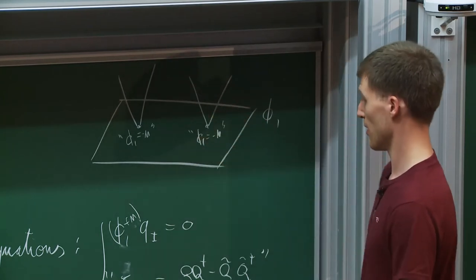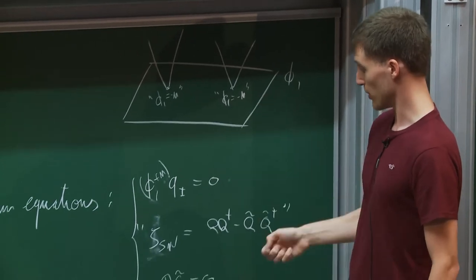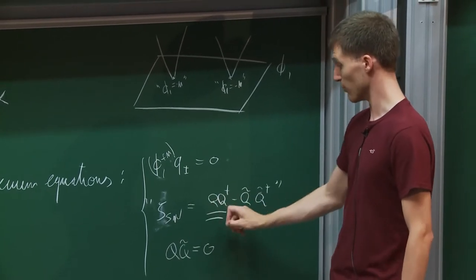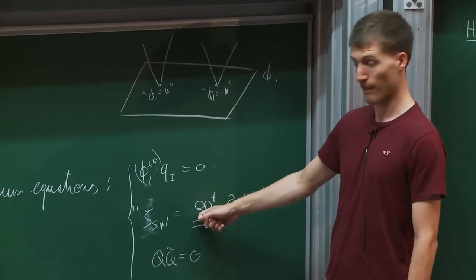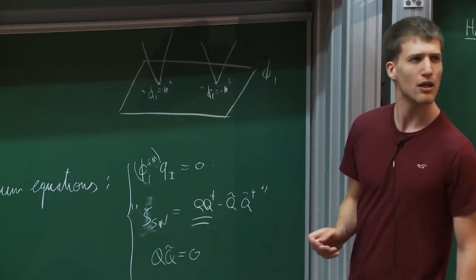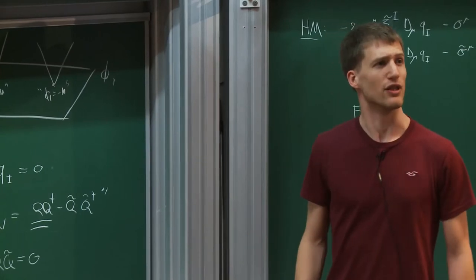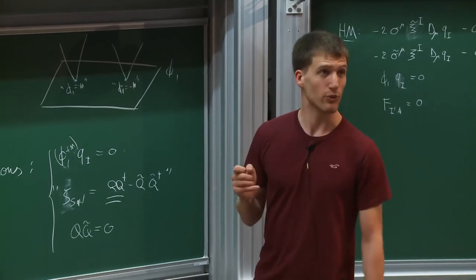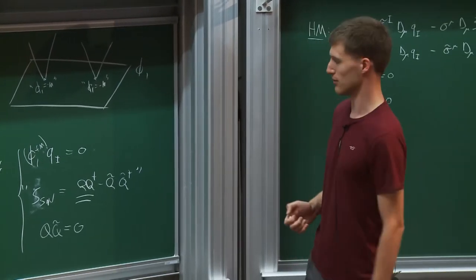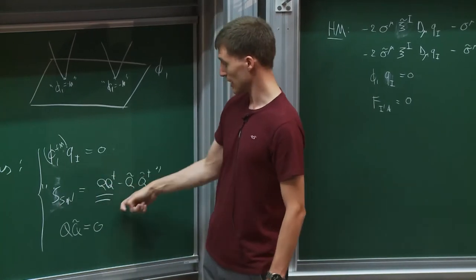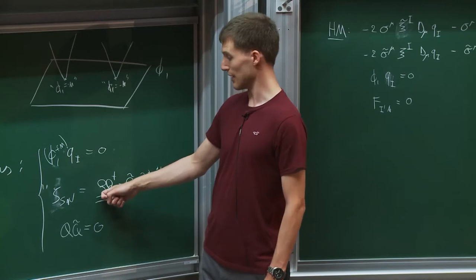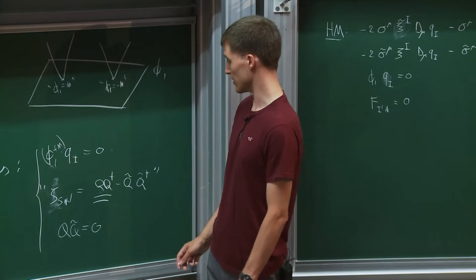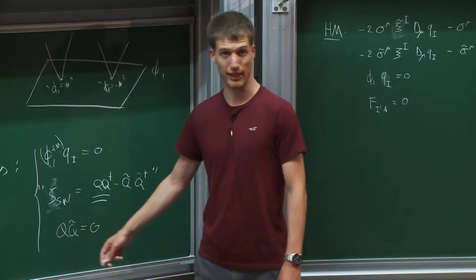Roughly speaking, at specific points one eigenvalue of Phi_1 equals minus one eigenvalue of the mass matrix. It's clear that Higgs branches open up only at points. When zeta is positive there is a solution where q equals square root of zeta, and when zeta is negative there is a solution where q-tilde equals square root of zeta. Both q and q-tilde cannot be non-zero simultaneously.